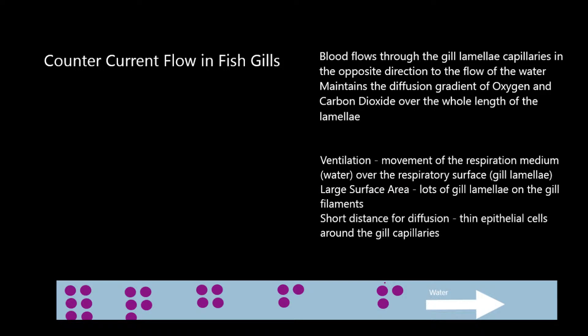The next principle is that you have a large surface area for gas exchange — you have a lot of gill lamellae on the gill filaments. The final principle is that there is a short distance for diffusion, in that the epithelial cells are very thin around the gill capillaries.